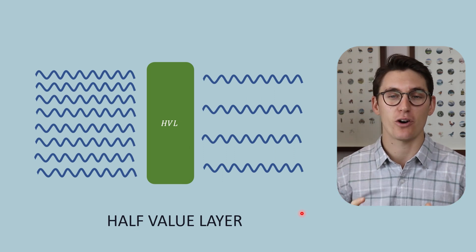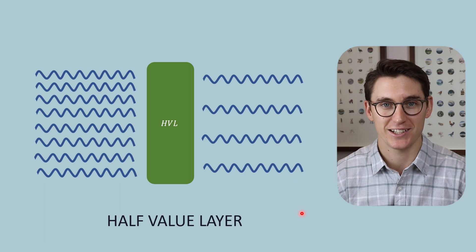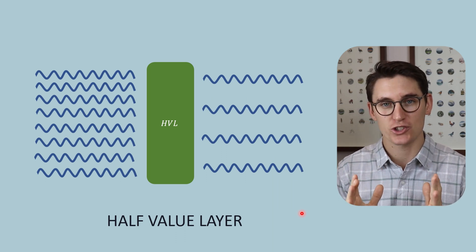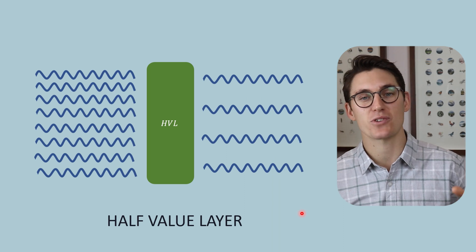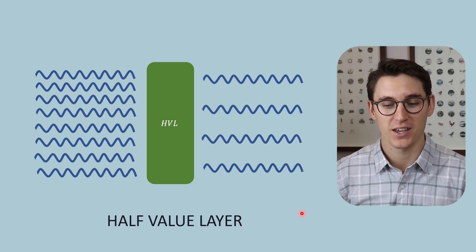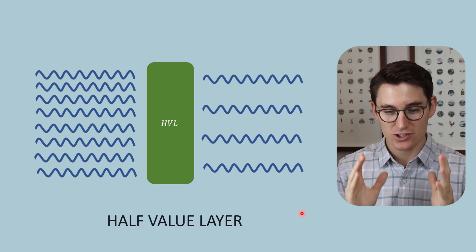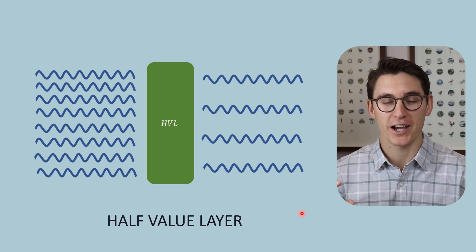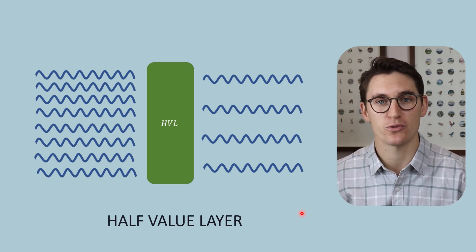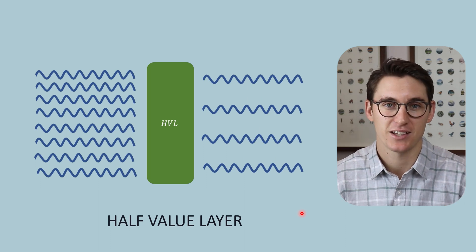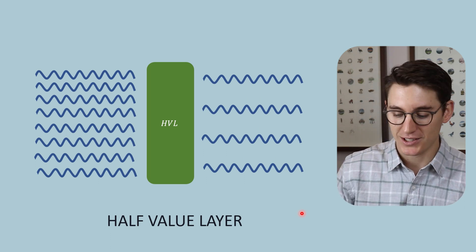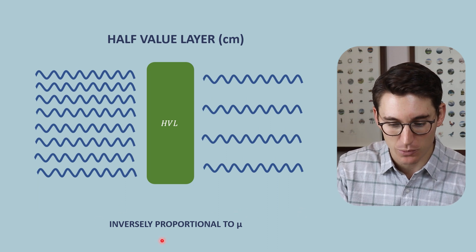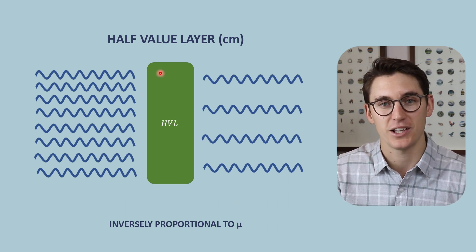Today we're going to be looking at the half value layer. In its most simplest terms, the half value layer is the thickness of tissue required to reduce the x-ray beam intensity by half. It's the thickness of tissue that will reduce the photon number of the x-ray beam by half — removing half of those photons over that distance. We saw that the half value layer is inversely proportional to our linear attenuation coefficient.